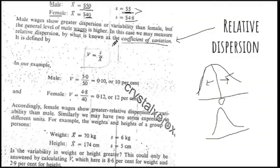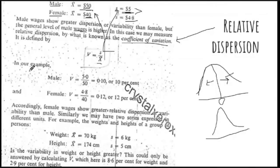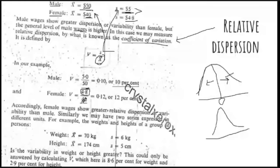So how do we calculate the coefficient of variation? We write the standard deviation of males and divide it by their average — we get a coefficient of variation of 10%. We write the standard deviation of females and divide by their average — this gives 12%. Now you can see that females' coefficient of variation is bigger as compared to males' coefficient of variation — 12% is greater than 10%.